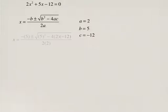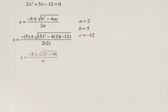We substitute into our formula and simplify, and we end up with x equals -5 plus or minus the square root of 25 plus 96.